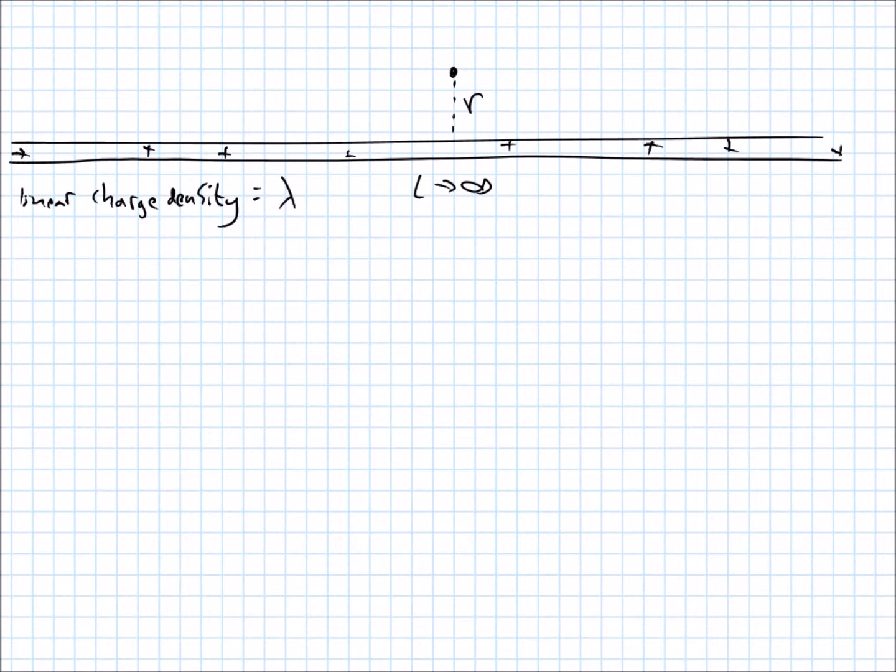Imagine we chopped it in half or something and we stood and looked at the wire like that. So that's the wire coming at us. And the electric field from this wire, since it's positive, is going to be pointing out in all directions, right?